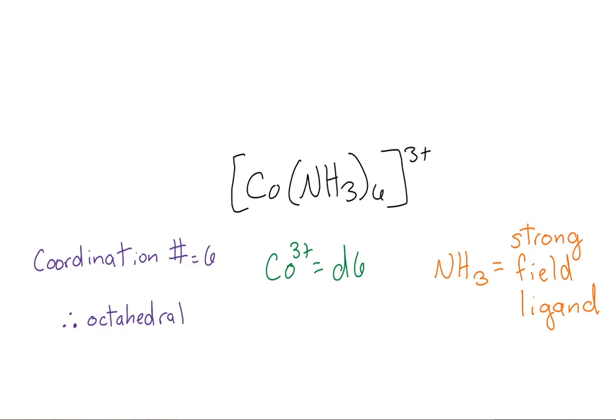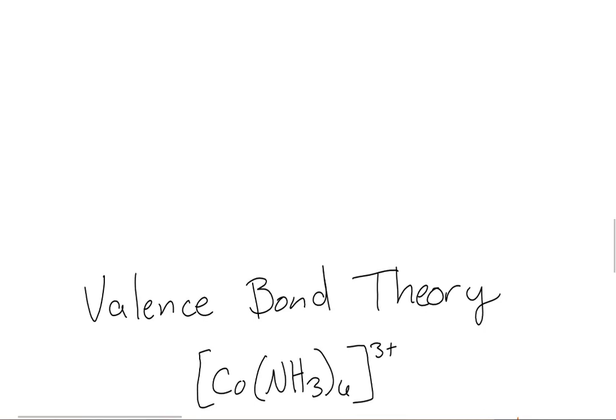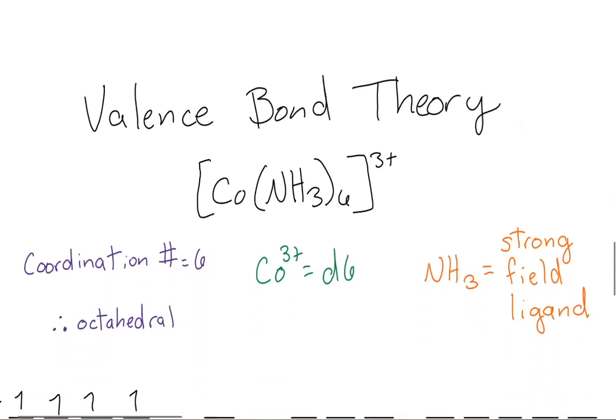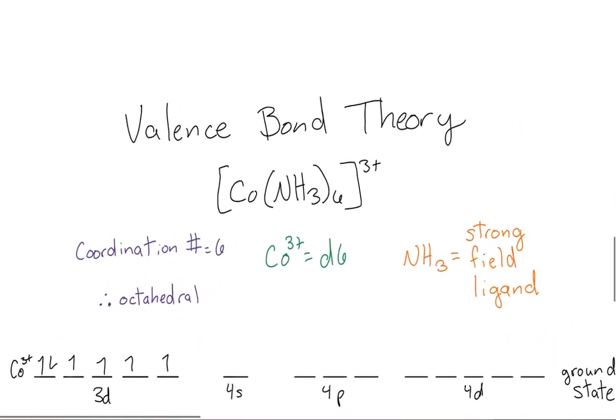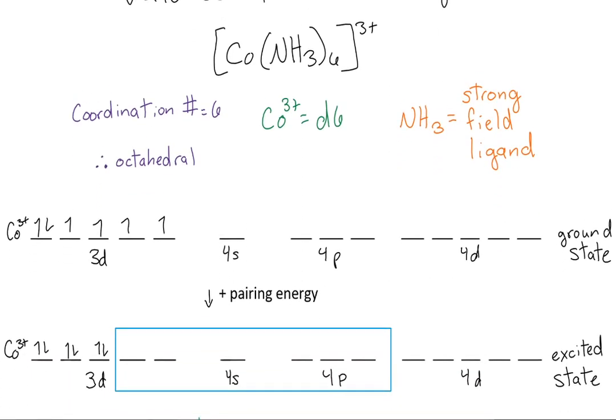Using this information, let's build our diagrams, starting with the valence bond theory. We'll start with the ground state. I filled in the valence electrons on the left in the 3d orbital. Since ammonia is a strong field ligand, we'll get to add pairing energy and force the electrons to pair. We see this in the excited state. All six electrons have paired up.